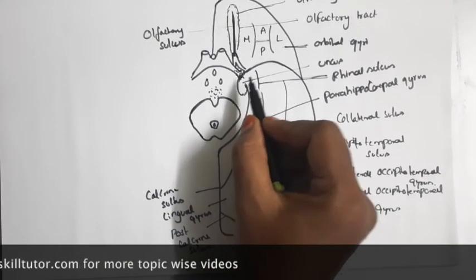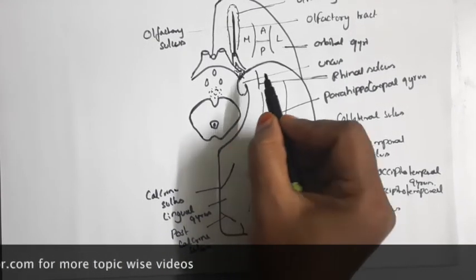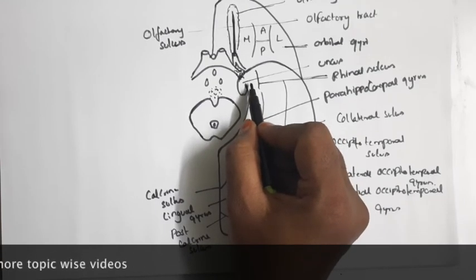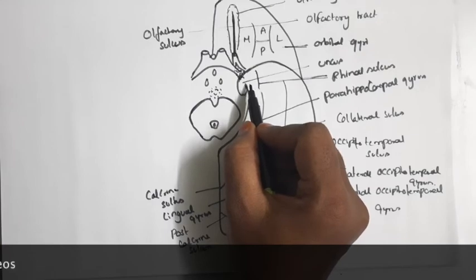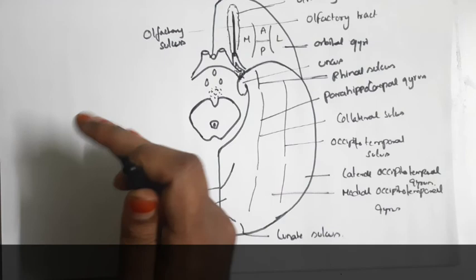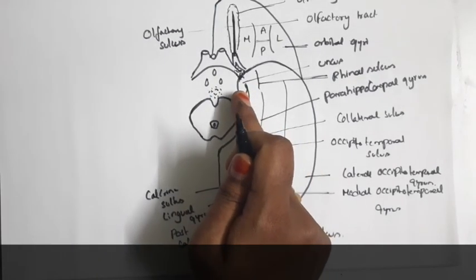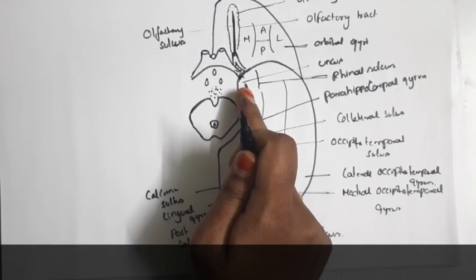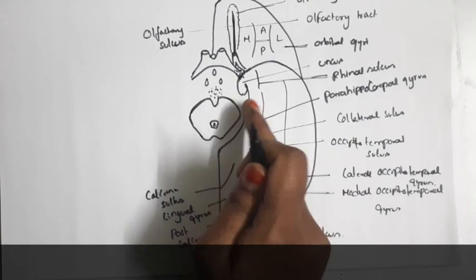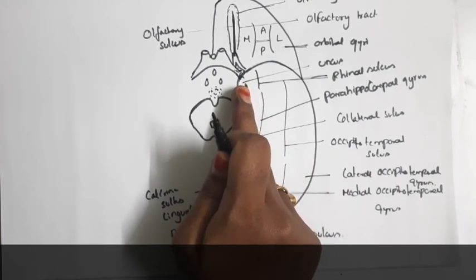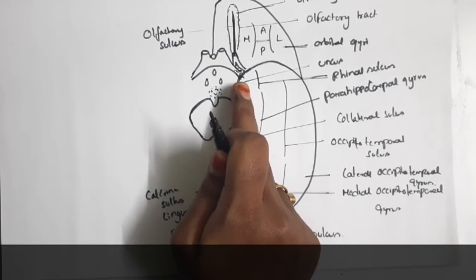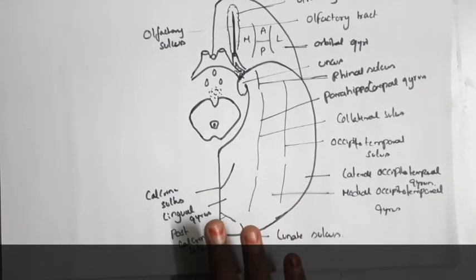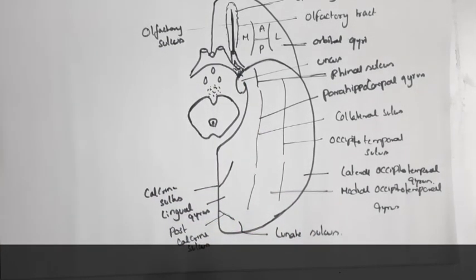Here, this uncus part — this parahippocampal gyrus — posteriorly continues with the cingulate gyrus through the isthmus. On the medial surface we will see the cingulate gyrus, just above the corpus callosum. We see the cingulate sulcus, and the area between those two is known as the cingulate gyrus. So these are the sulci and gyri which are seen on the inferior surface of the cerebrum.